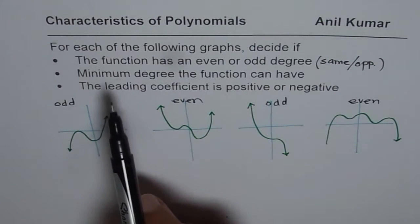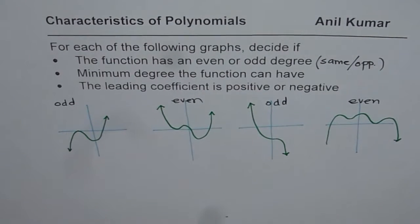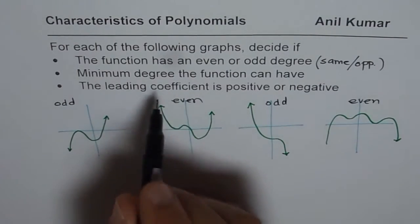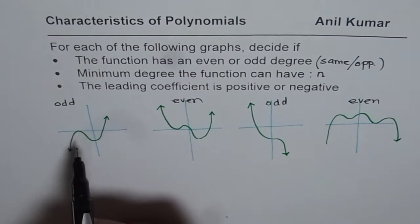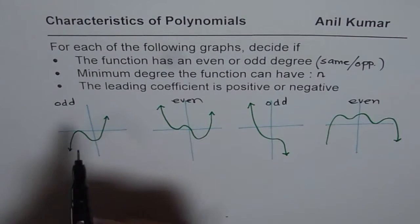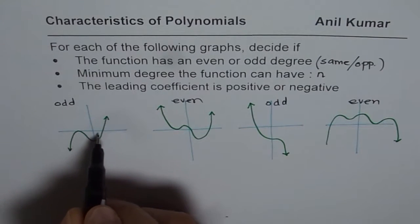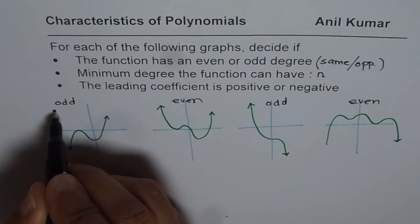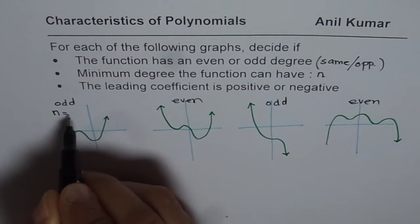Now, the question is, minimum degree the function can have. So, how do you find minimum degree? Let us call that as n. Minimum degree depends on the zeros. Now, here we have a zero which is at least of order 2, since it turns, and this is a linear zero. So, n, the degree in this case, minimum, can be 2 plus 1, 3.